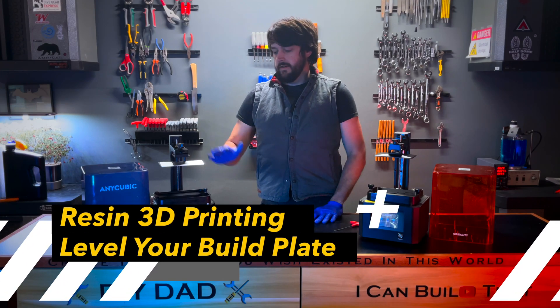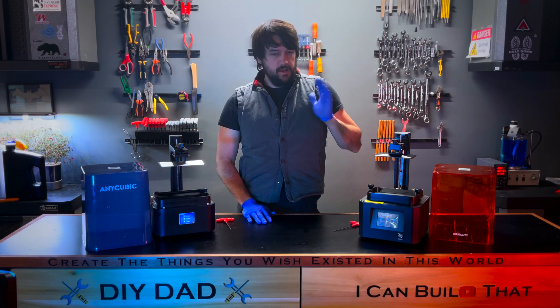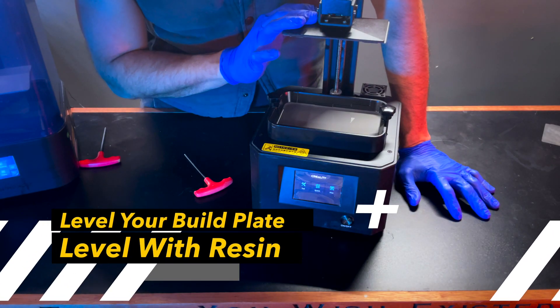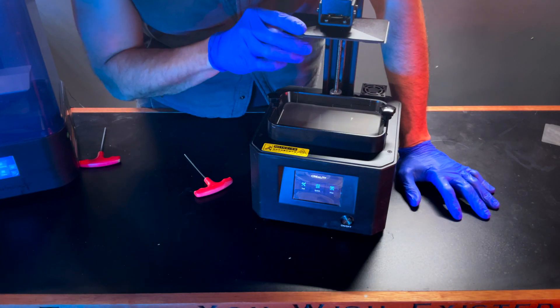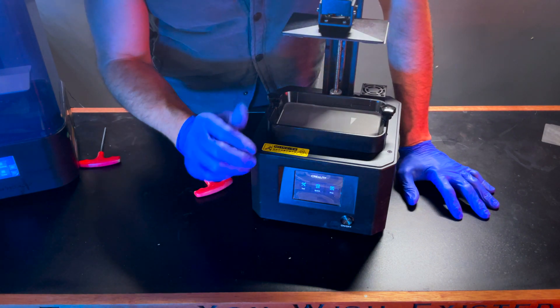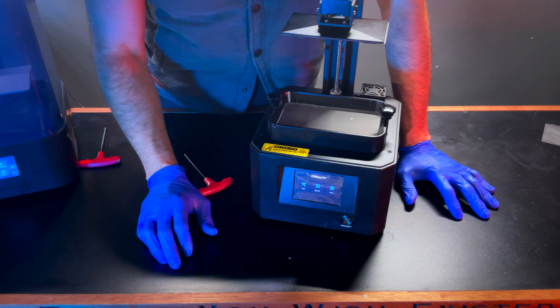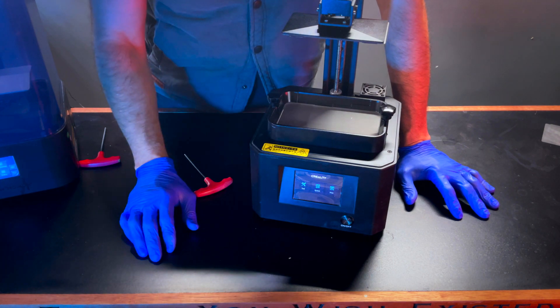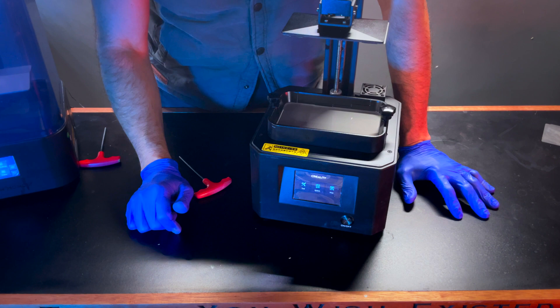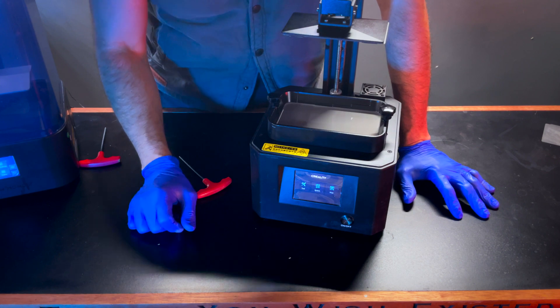All right, so you're here learning to level your build plate. If you've already got resin in your 3D printer's resin vat, I'm going to show you how I level my resin build plate if somehow it's come loose and there is resin in the vat. This doesn't happen very often, but occasionally it does, and I'm going to show you how to do it so that you don't have to clean out your resin vat each time this needs to happen.